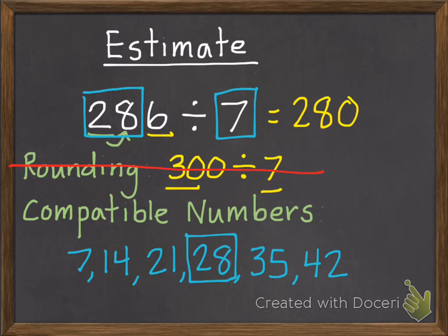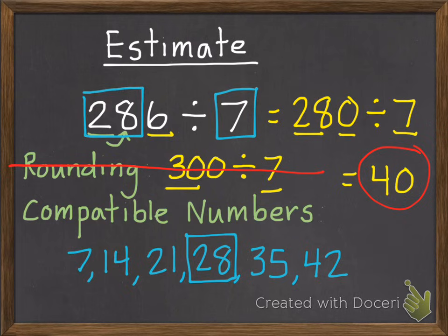So we're going to make that 280 divided by 7, and now this is something we can do in just a few seconds. So 28 divided by 7 is 4 with a 0, which is much easier than trying to figure out 300 divided by 7, which wouldn't save us any time at all.